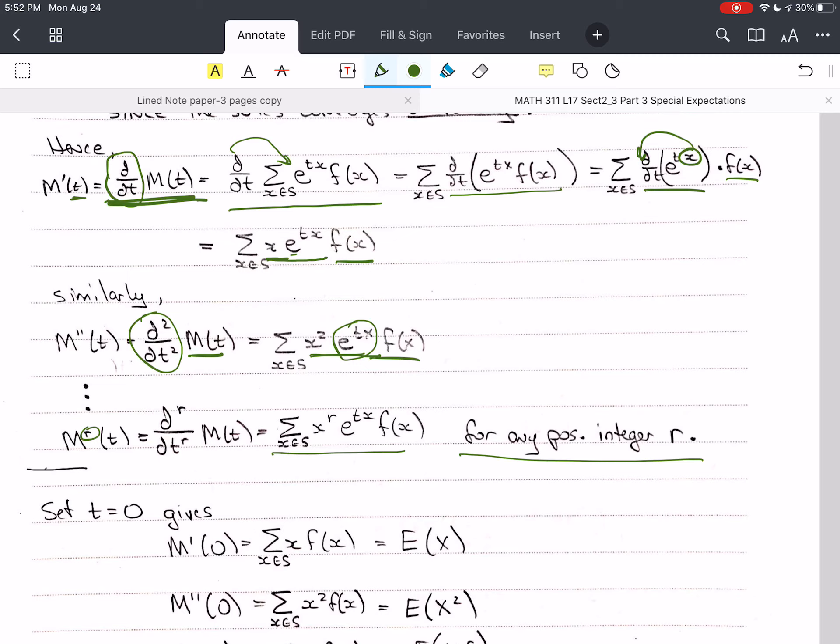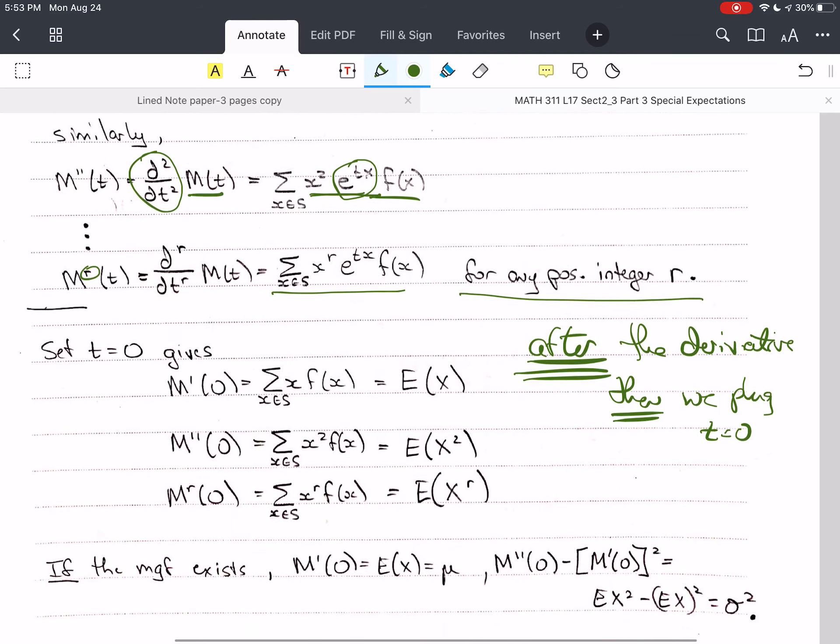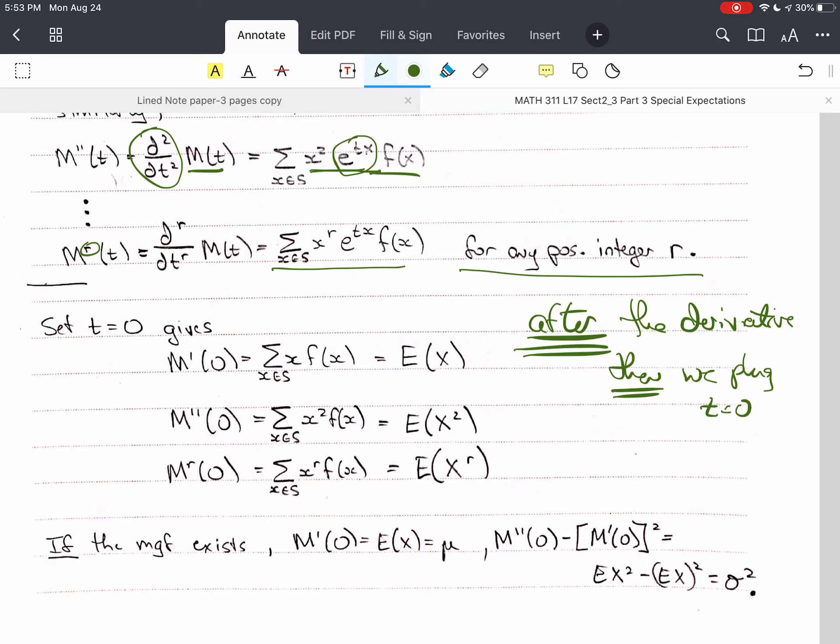Now, similarly, we can take the derivative of the first derivative and get the second derivative. And so, we have the second derivative of m of t now becomes x squared because that's the thing about e to the tx, right? Derivatives of e to the t, they replicate themselves. So, each time we're taking the derivative with respect to t, we get an x. So, we have x squared e to the tx f of x. And the r-th derivative becomes sum of x to the r e to the tx f of x. And that's for any positive integer r. Now, after we take the derivative, after the derivative, then we plug t equals 0. Not before.